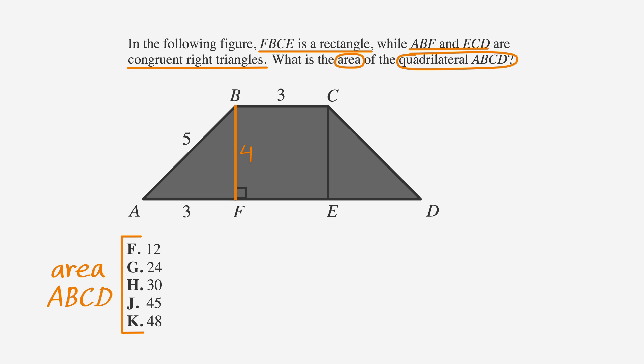Now we can find the area of triangle ABF by using the formula area equals one-half base times height. Plugging in 3 for the base and 4 for the height, we get one-half times 3 times 4, which is 6. Since we know the area of the triangle on the left is 6, and the problem states ABF and ECD are congruent, we know that the area of the triangle on the right is also 6.